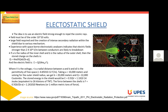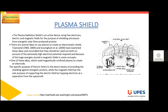The next technology is the plasma radiation shield. It uses an active device using free electrons and electric and magnetic fields for the purpose of shielding astronauts from energy. It has the sole purpose of supporting the electric field by trapping electrons at a separation from the spacecraft. It follows the electric field required for the plasma radiation shield, similar to the pure electrostatic shield. Here, we use voltage on the order of 30 to 100 megavolts.